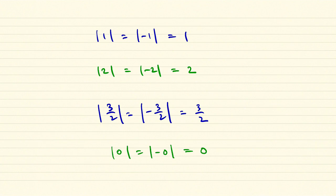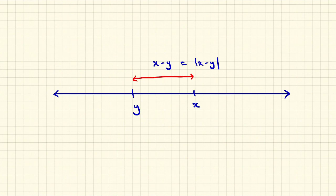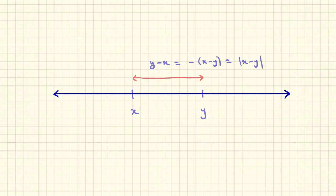It's an important and useful fact that the distance between two numbers is the absolute value of their difference, and it doesn't matter which order you take the difference. For example, if x is greater than y, so x appears to the right of y on the number line, then the distance between them is just x minus y, and that's the absolute value of x minus y because it's positive. If x is less than y, then the distance between them now is y minus x, which is the negative of x minus y, and that's, by definition, the absolute value of x minus y.